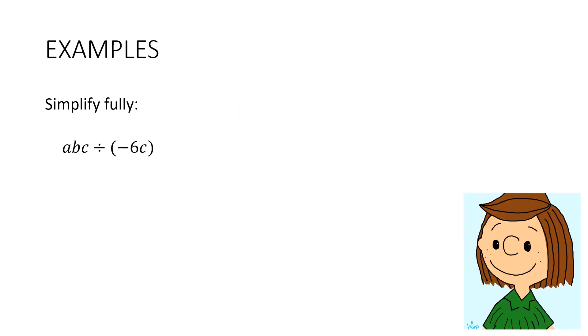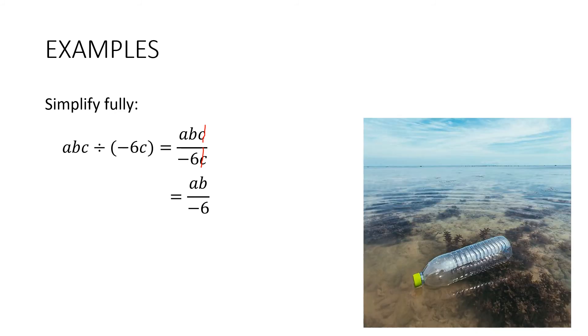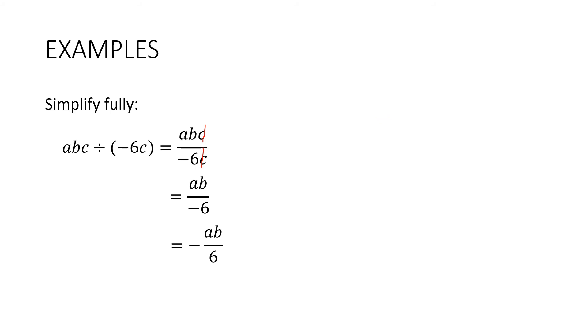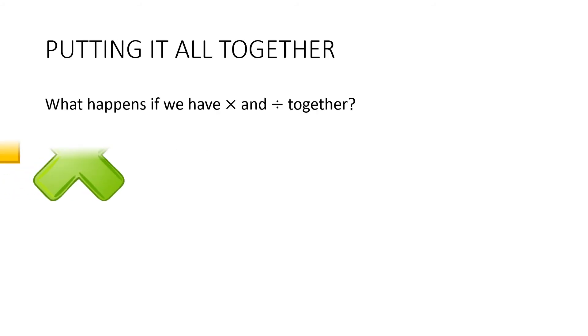Let's do one more. abc divided by negative 6c. So let's write it in fraction notation. And the only things that actually cancel here are the c's. Which is going to leave us with ab on negative 6. But here's the thing. We never leave a minus on the denominator. Think of it like it's a plastic bottle full of air and you're trying to push that underwater. It's going to float up. And we've got two choices. We can either put the minus in front of the fraction, or we can put it on the top of the fraction.